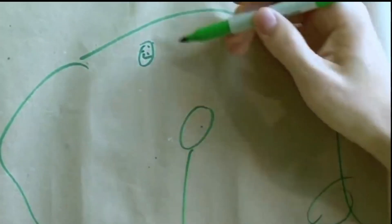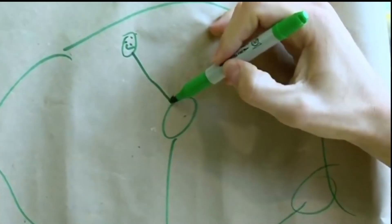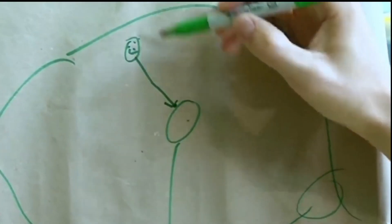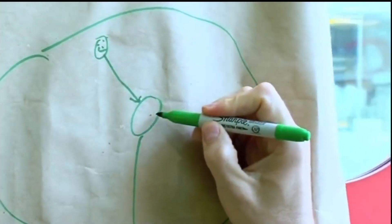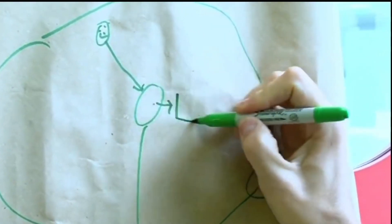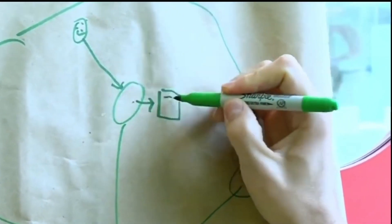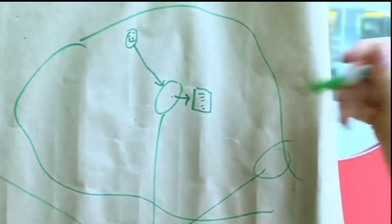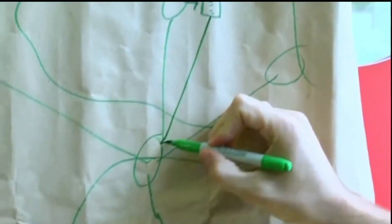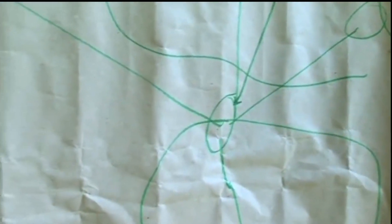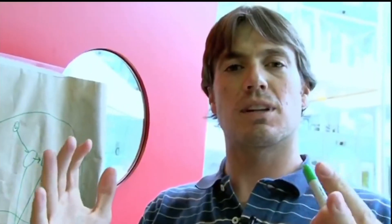Here's you at your computer watching the video. If you make a request to this server, this server is going to give you the video, and at the same time this server is going to write a little message to a log - just one line in a log. Every once in a while we collect all of these logs, ship them in from central Europe or wherever into the central log collection area, aggregate them all together, and then go through and count them up.